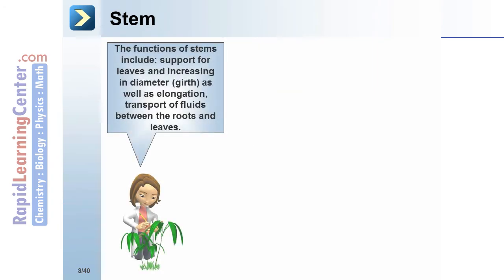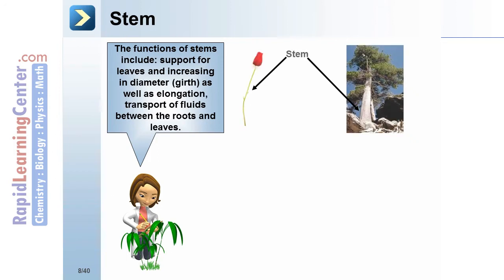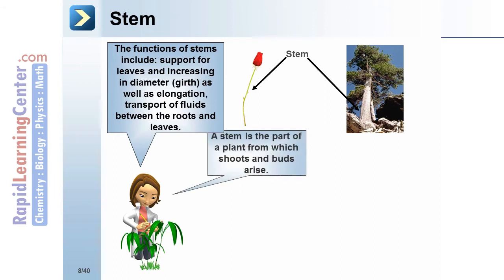The functions of the stem include support for leaves, increasing in diameter and girth, as well as elongation. The stem transports fluids between the roots and the leaves. A stem is the part of a plant from which shoots and buds arise.